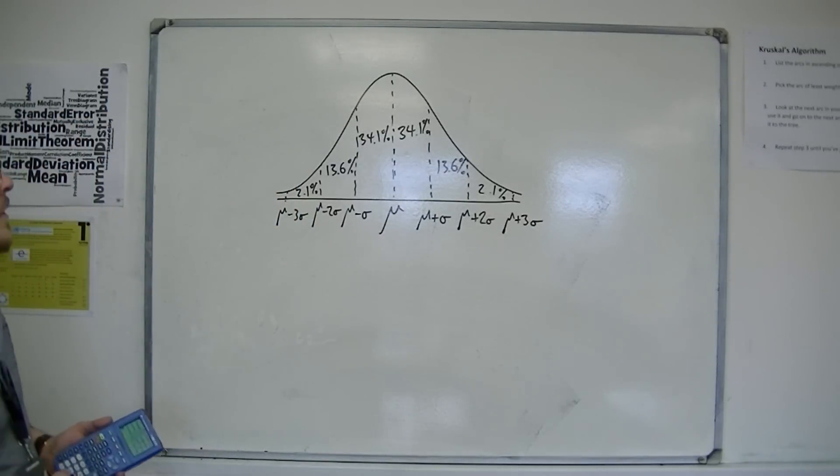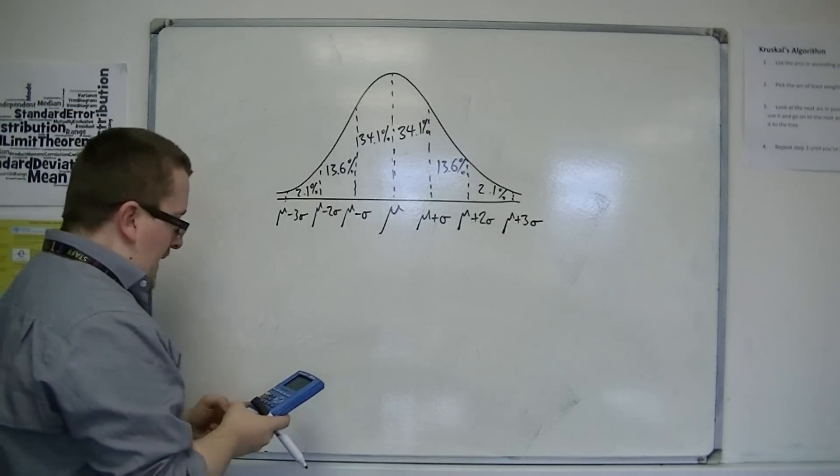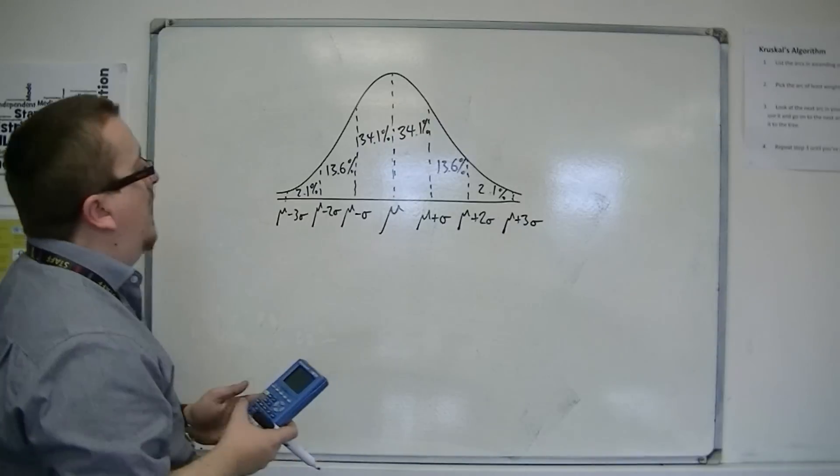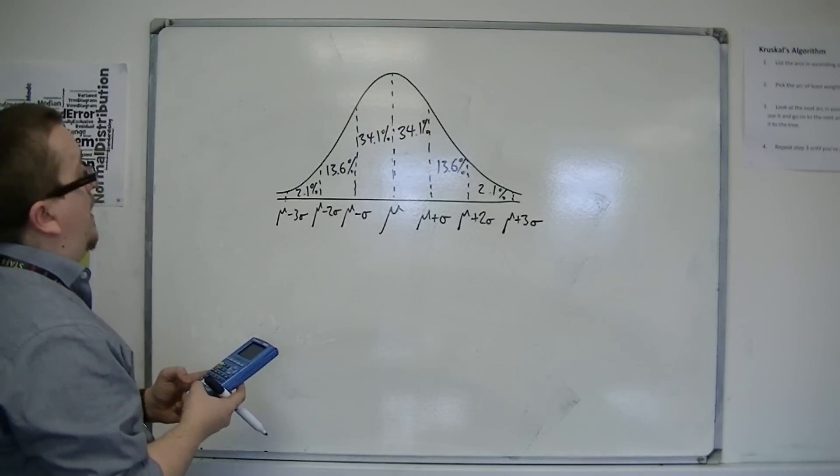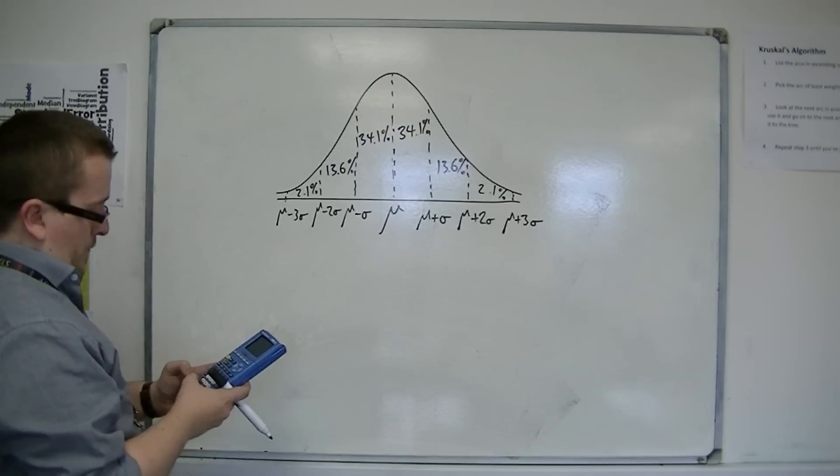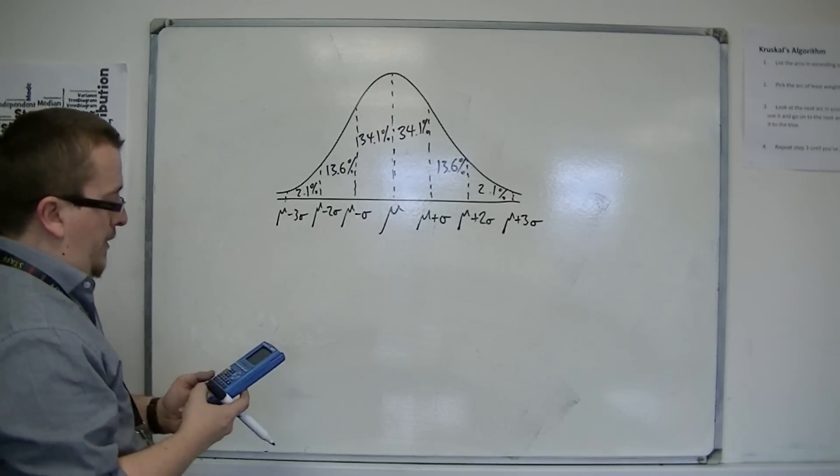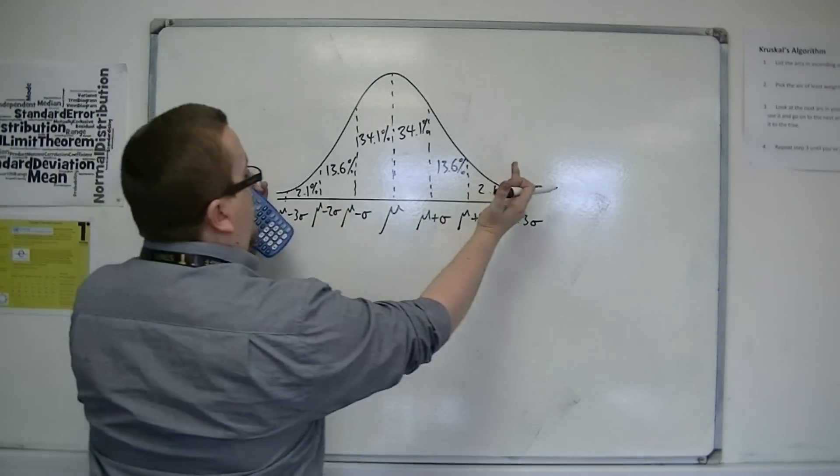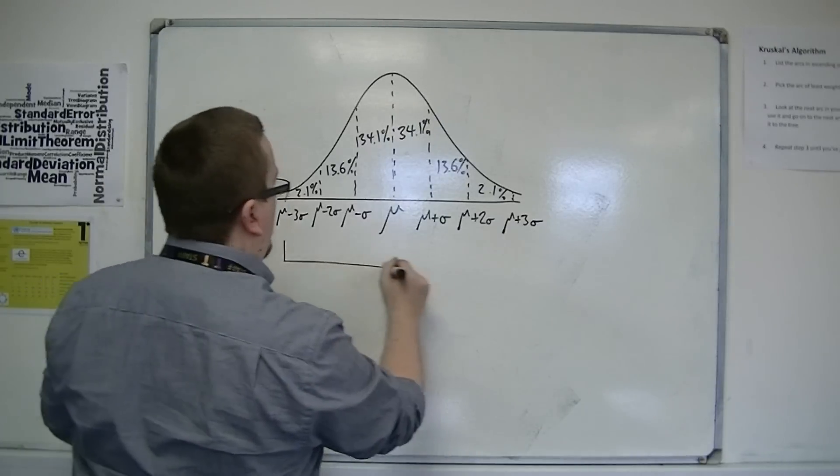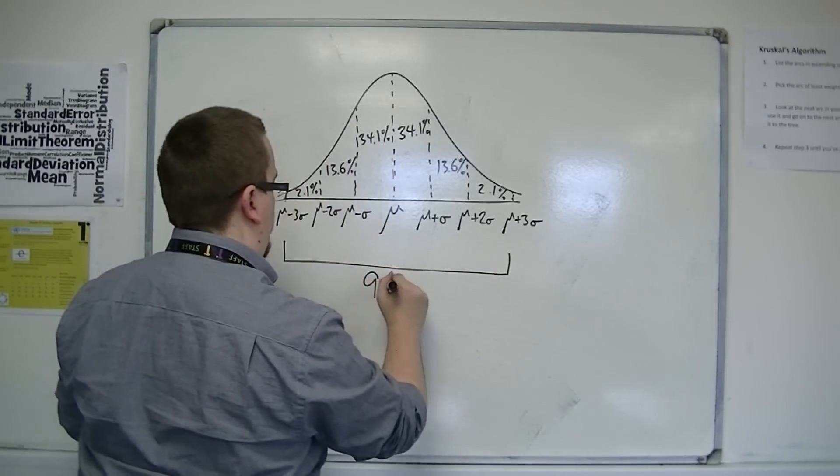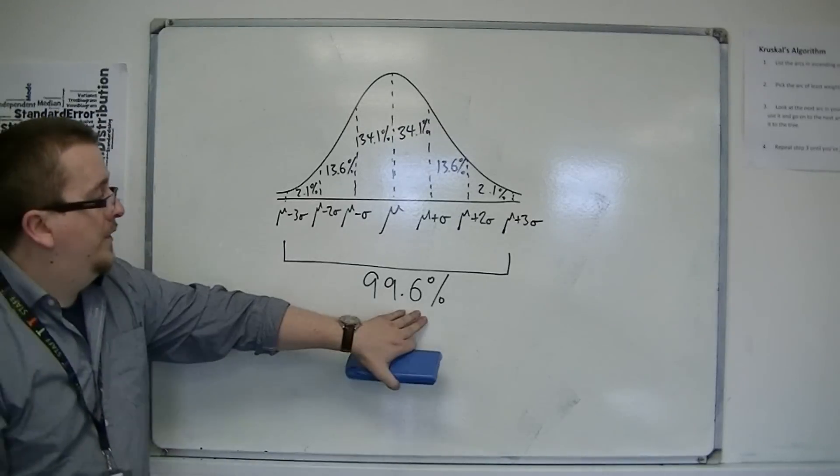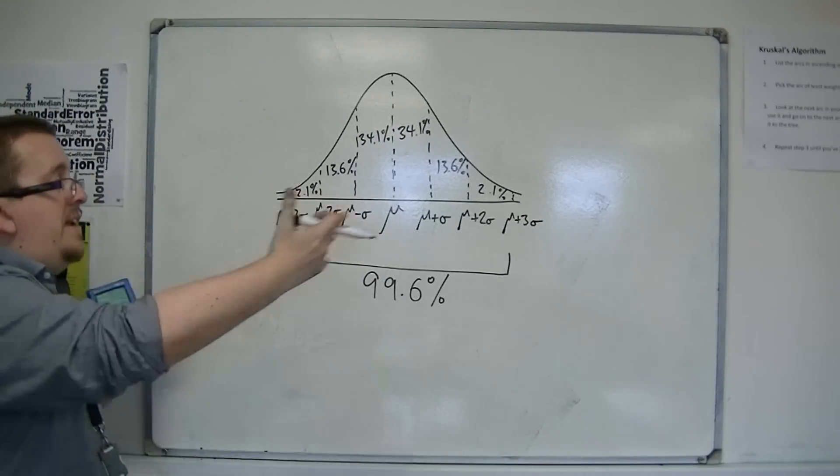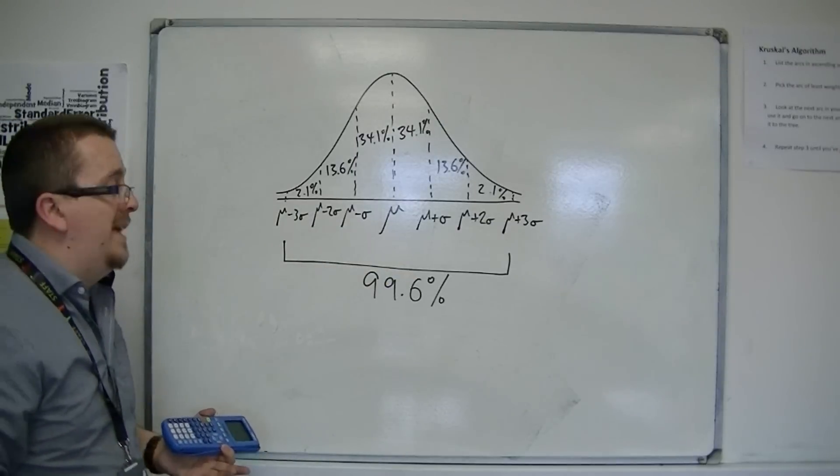So you can see that actually, if you total up these percentages, then we're talking about 2.1, then times that by 2. So 99.6% of the data is within three standard deviations either side of the mean.